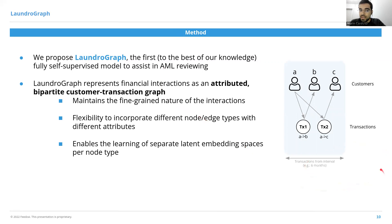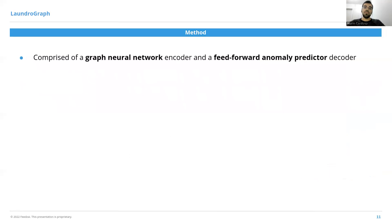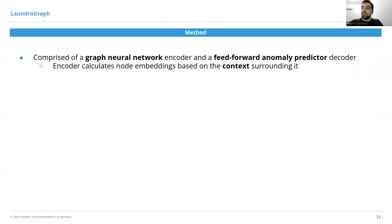These types of graphs are represented pictorially here — we have customers, transactions, and directed edges between them. This graph is created based on a raw dataset comprising transactions for a given period; in our experiments, we used transactions for six months to build this graph. Our model is comprised of an encoder and a decoder: the encoder is a graph neural network and the decoder is a feed-forward anomaly predictor.